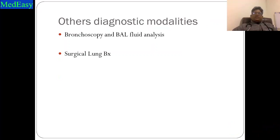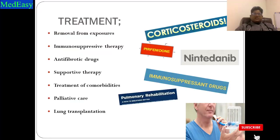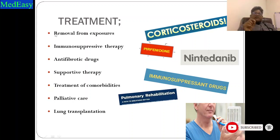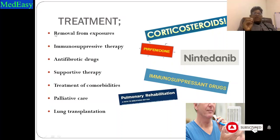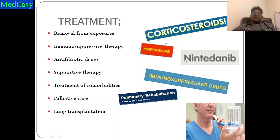Other diagnostic tests include bronchoscopy with BAL, which is rarely required, and surgical lung biopsy, which is almost not done nowadays because CT findings are well-appreciated in ILD. For treatment, the first and foremost step is removal from exposure — by taking a detailed history we identify the etiology and remove that factor, stabilizing and ultimately improving lung function. Immunosuppressive therapy options include corticosteroids, and antifibrotic agents like pirfenidone and nintedanib.